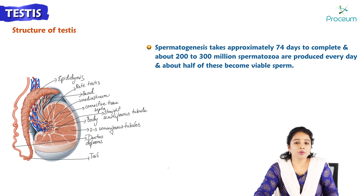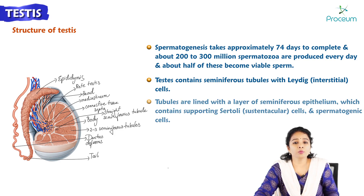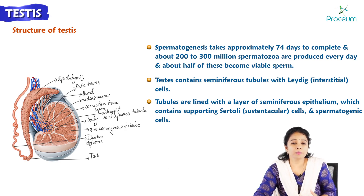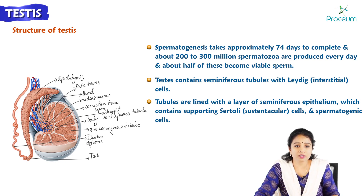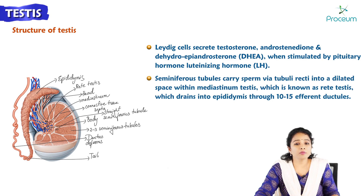Spermatogenesis takes approximately 74 days to complete, and about 200 to 300 spermatozoa are produced every day, of which about half become viable sperm. The testis contains seminiferous tubules with Leydig or interstitial cells. The tubules are lined with seminiferous epithelium containing supporting cells called Sertoli cells or sustentacular cells, as well as spermatogenic cells. Leydig cells secrete testosterone, androtestosterone, or dehydroandrotestosterone hormone when stimulated by the pituitary hormone luteinizing hormone. Seminiferous tubules carry sperm via the tubuli recti into a dilated space within the mediastinum testis, known as the rete testis.